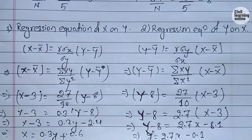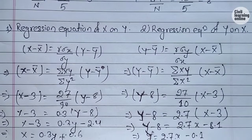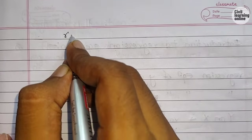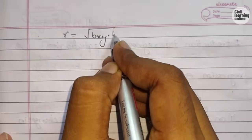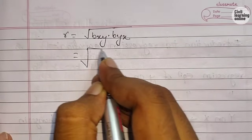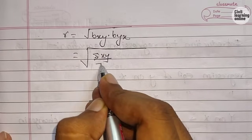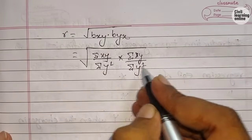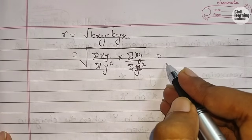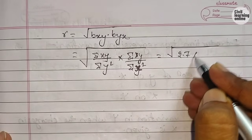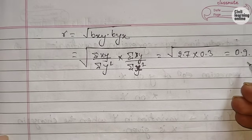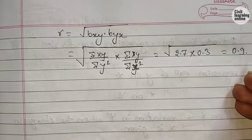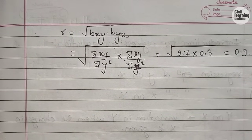Finally, let us calculate the correlation coefficient. We have r equals the square root of (bxy times byx). We already have bxy equals 0.3 and byx equals 2.7, so r equals the square root of (2.7 times 0.3), which equals the square root of 0.81, giving r equals 0.9. I hope this video was helpful. Thanks for watching — if you liked it, share it with your friends and subscribe to my channel. Have a nice day!